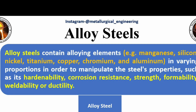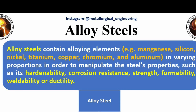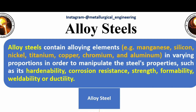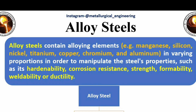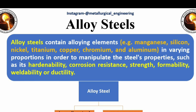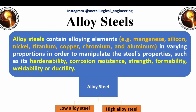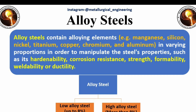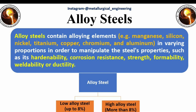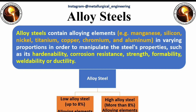Alloy steels can be further categorized into two groups depending on their alloying element content: 1. Low alloy steel, with up to 8% alloying elements, and 2. High alloy steel, with more than 8% alloying elements.